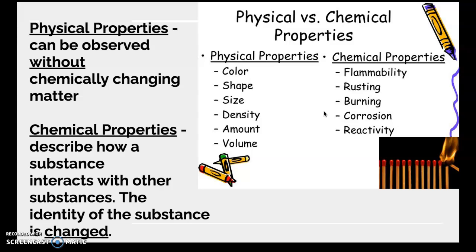Chemical properties, however, are substances that describe how substances interact with other substances and this means that the identity of the substance is changed. So generally we'll have a chemical reaction when we observe chemical properties. Some chemical properties are like, how does this element react with air? How does this element react with water? How does this element react with any other elements? Does it form molecules? Does it stay the same?